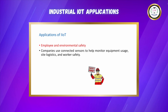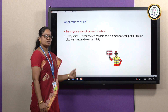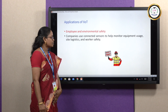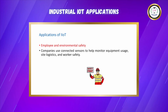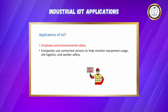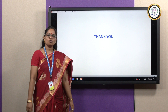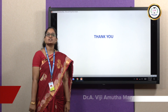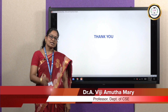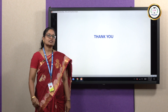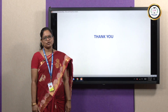Employee and environmental safety is also an application of industrial IoT. Companies use connected sensors to help monitor equipment usage, site logistics, and worker safety, which is a very important concern. So far, we have discussed some of the interesting applications of industrial IoT. I will meet you with another interesting topic in the next seminar. Until then, bye and thank you.